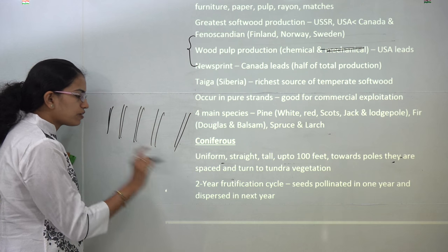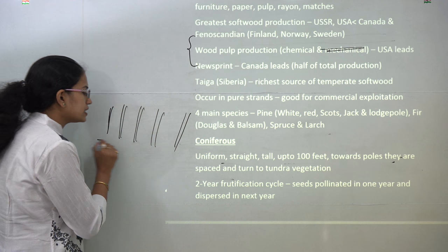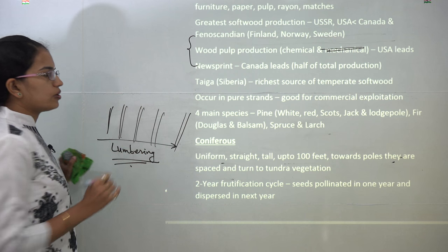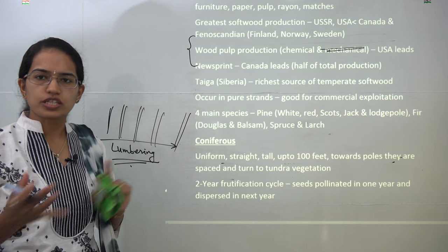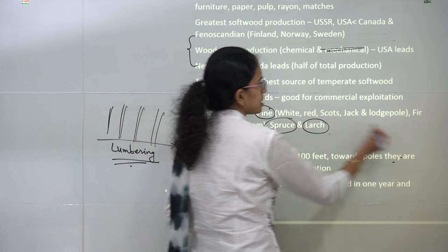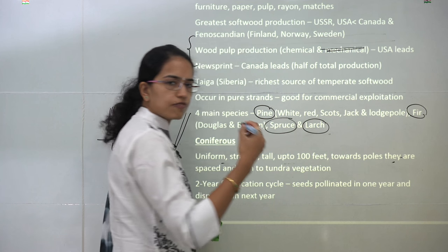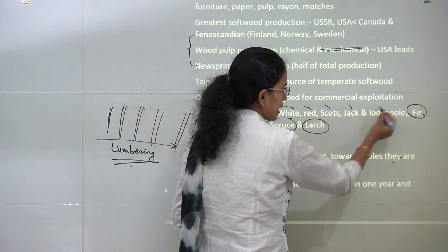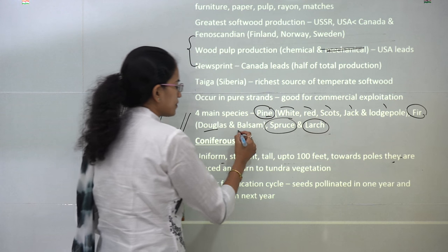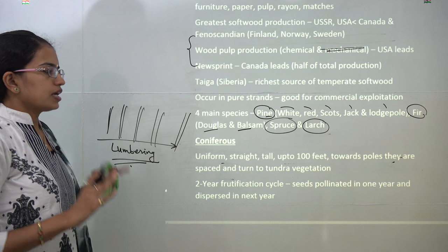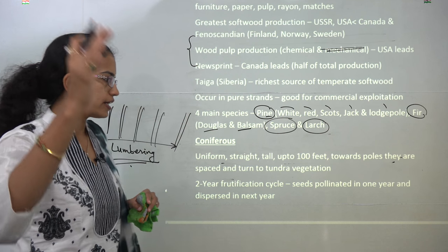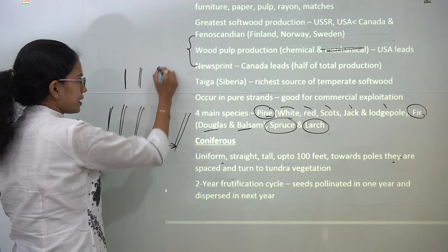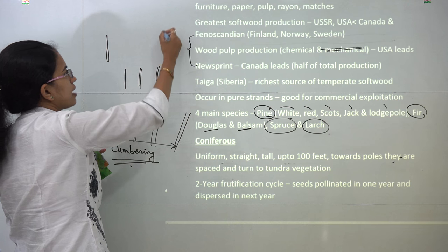Lumbering is commonly seen in this region. There are four common conifer species: pine, larch, spruce, and fir. Pine, fir, and spruce are found in the northern regions, while larch is found in the southern regions. Under pine, varieties include white pine, red pine, Scots pine, jack pine, and lodgepole pine. Under fir, common varieties are Douglas fir and balsam fir. Conifers are straight, very tall trees — up to 100 feet — and as you move north they are widely spaced. So density decreases as you move poleward.